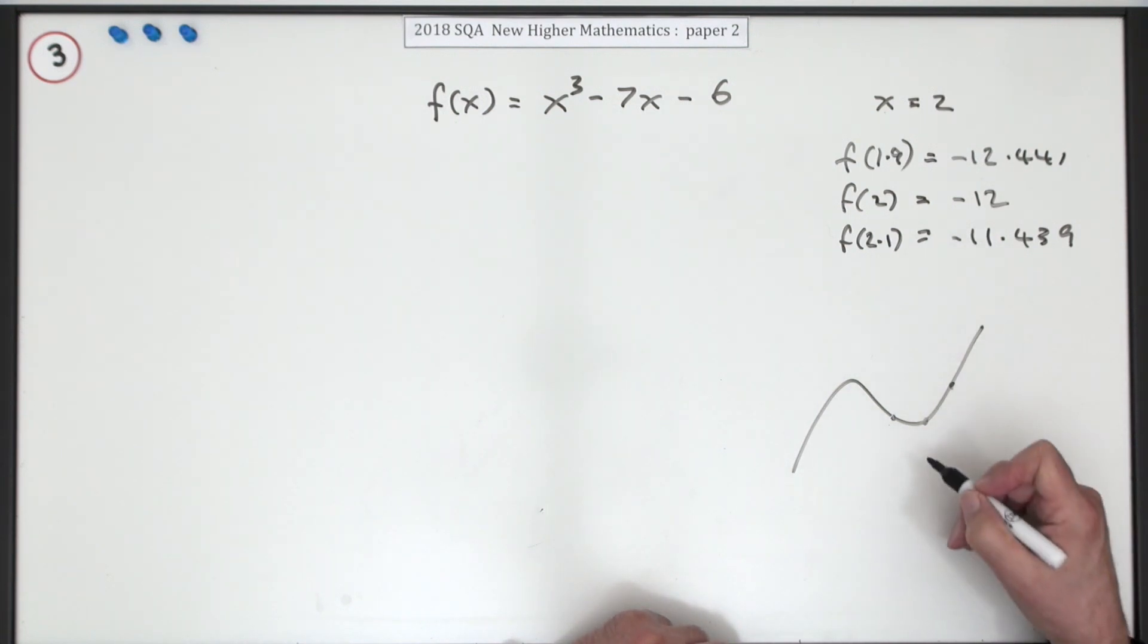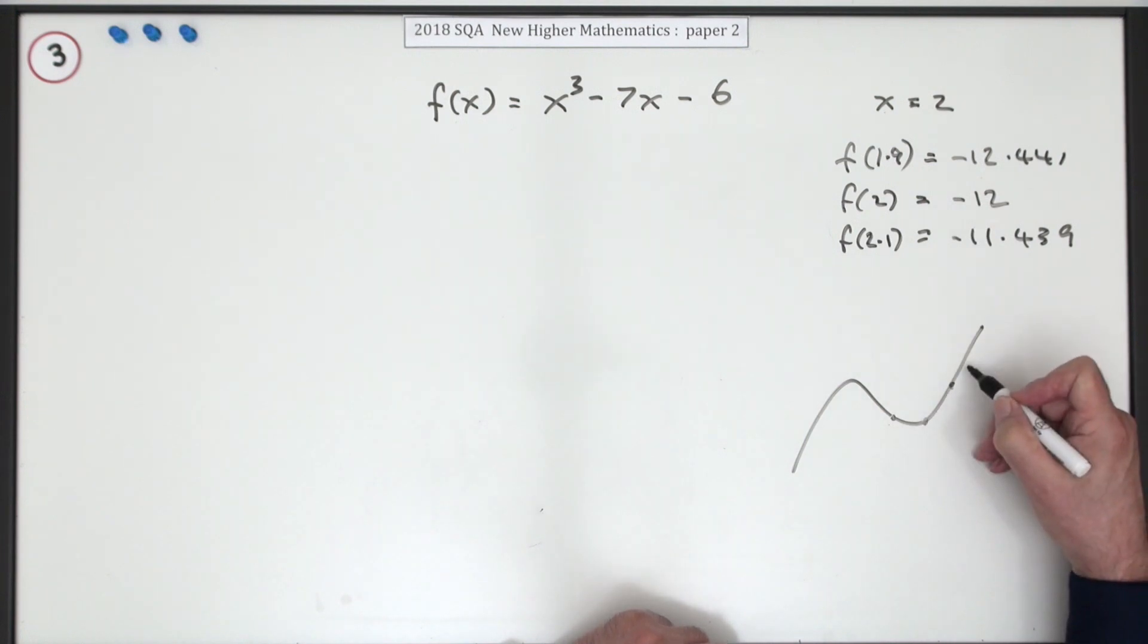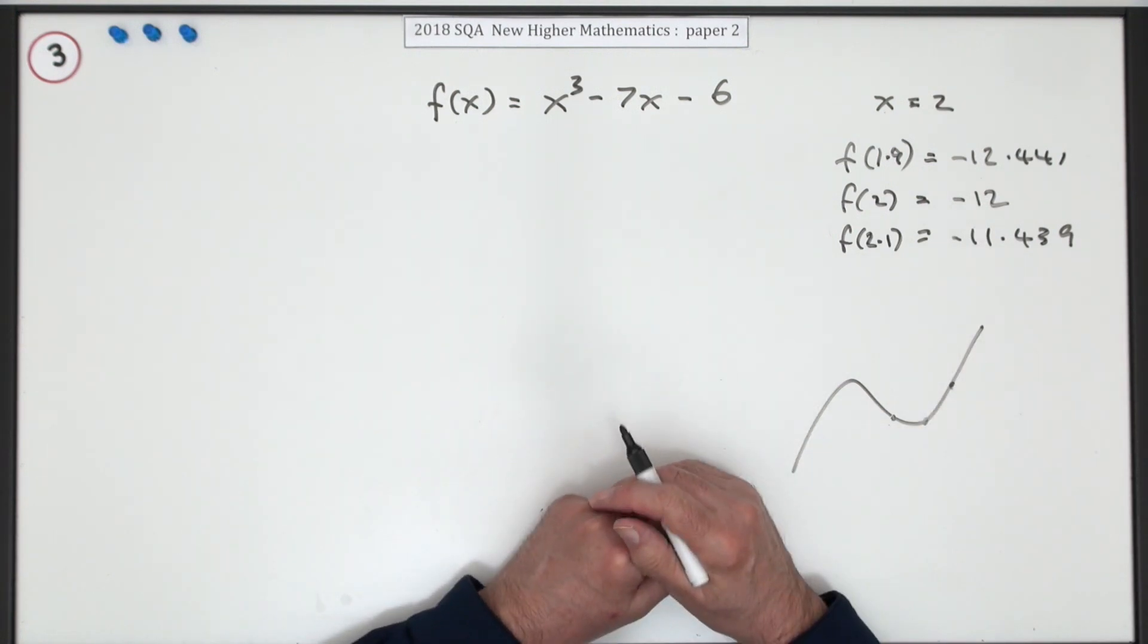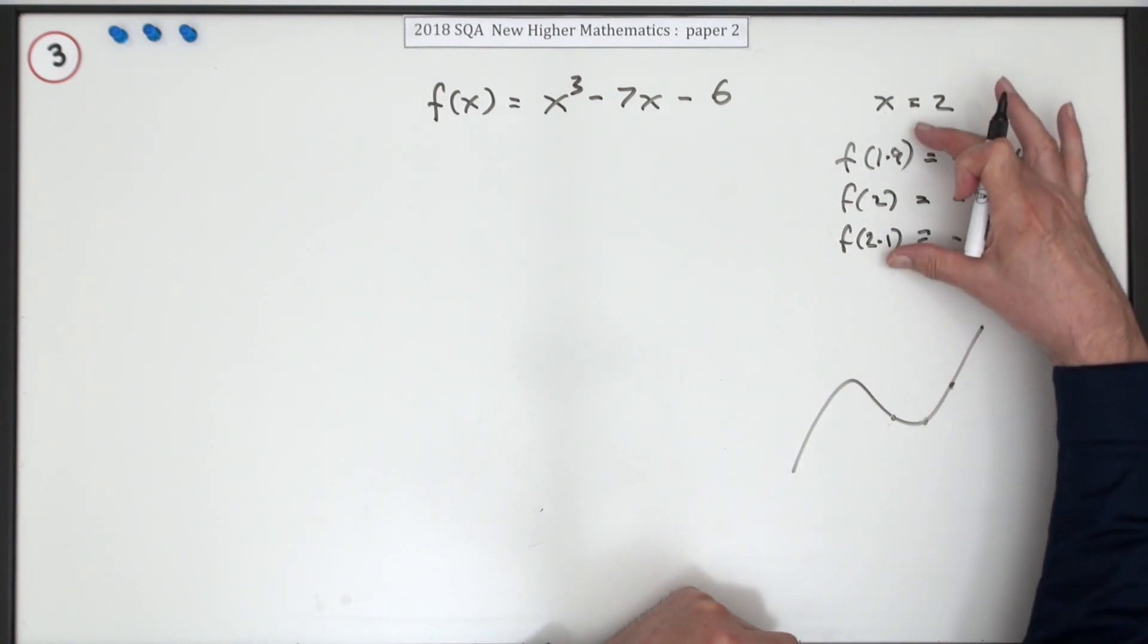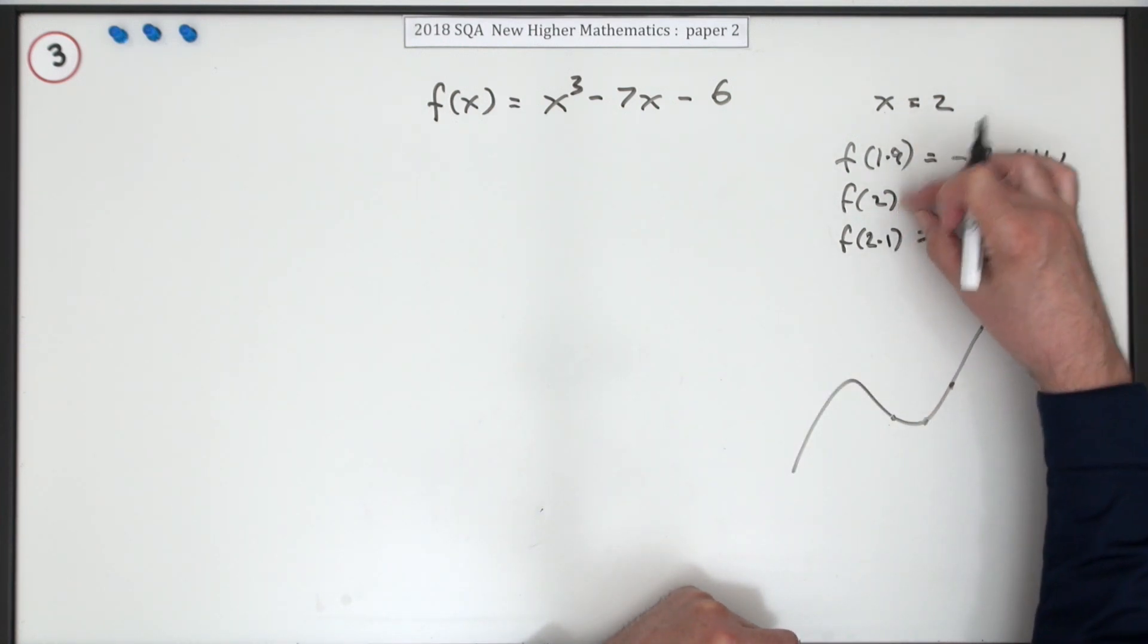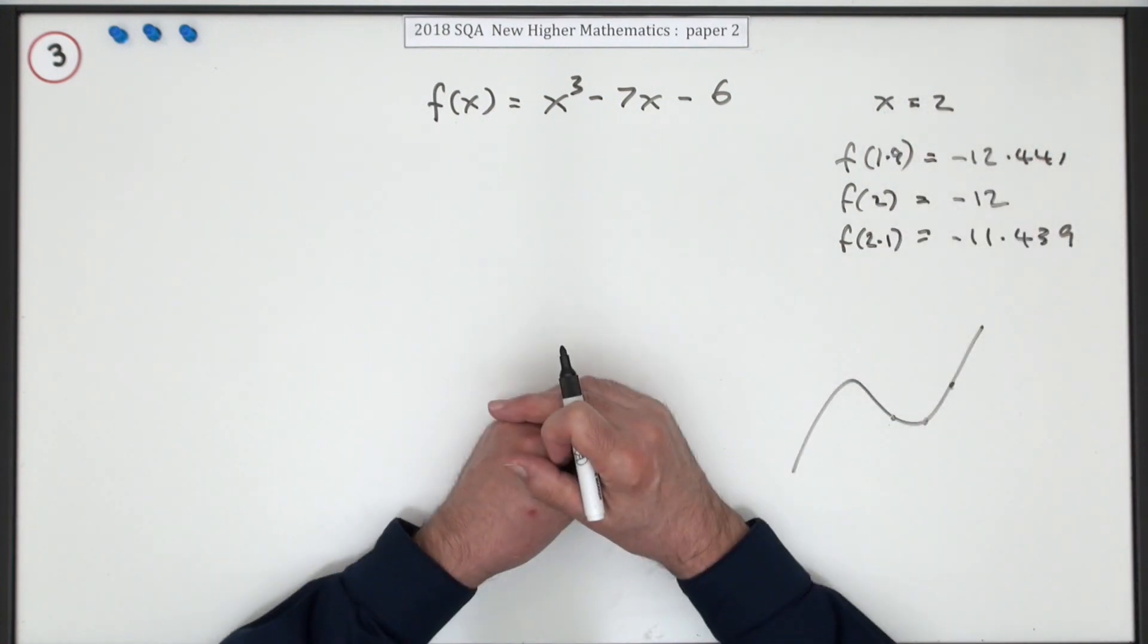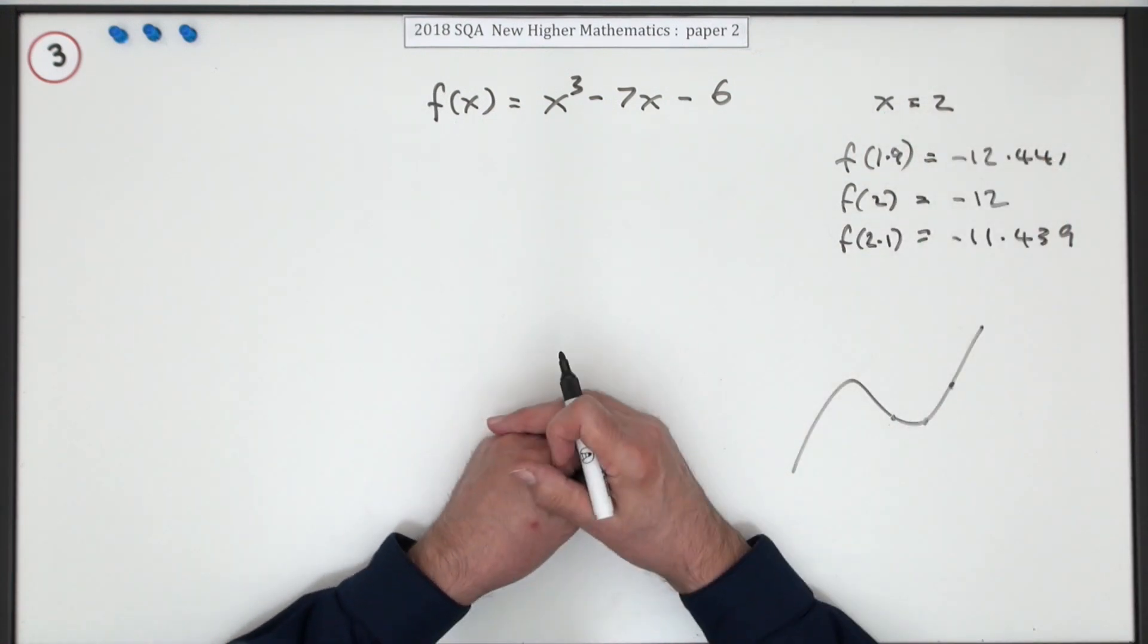The thing that takes care of that is the derivative, the rate of change, that would be the gradient of the graph. Because that already has incorporated into it making sure that the points on either side are as close as possible, are infinitesimally far apart, so there's no danger of anything happening between them.